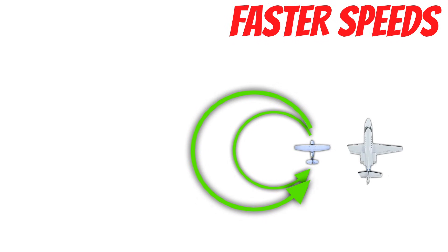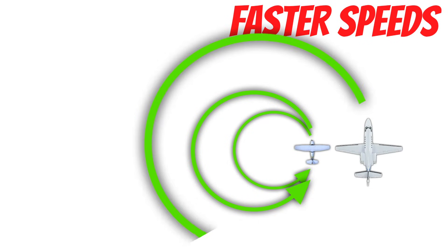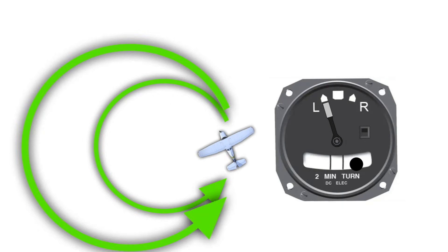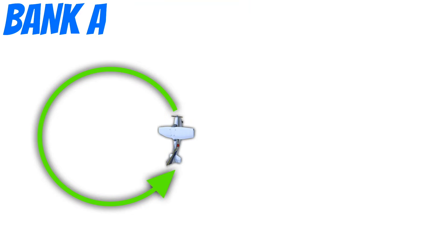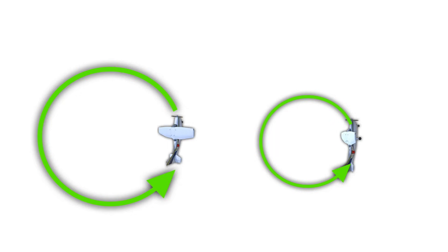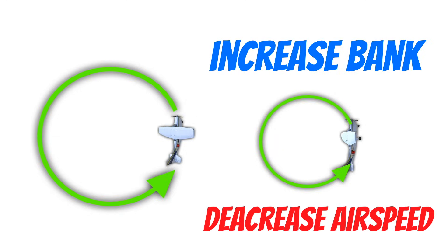Higher airspeeds actually increase turn radius, because the faster you're moving, the stronger the force of inertia is. Because of this, faster airplanes generally have a harder time making tight turn radiuses. If you aren't coordinated when you turn, this also increases the force of inertia, which can increase your turn radius. The more you roll the wings, the more horizontal lift you create, and this shrinks your turn radius or makes it tighter. To put it simply, if you want to shrink your turn radius, you must increase bank angle, decrease airspeed, or both.